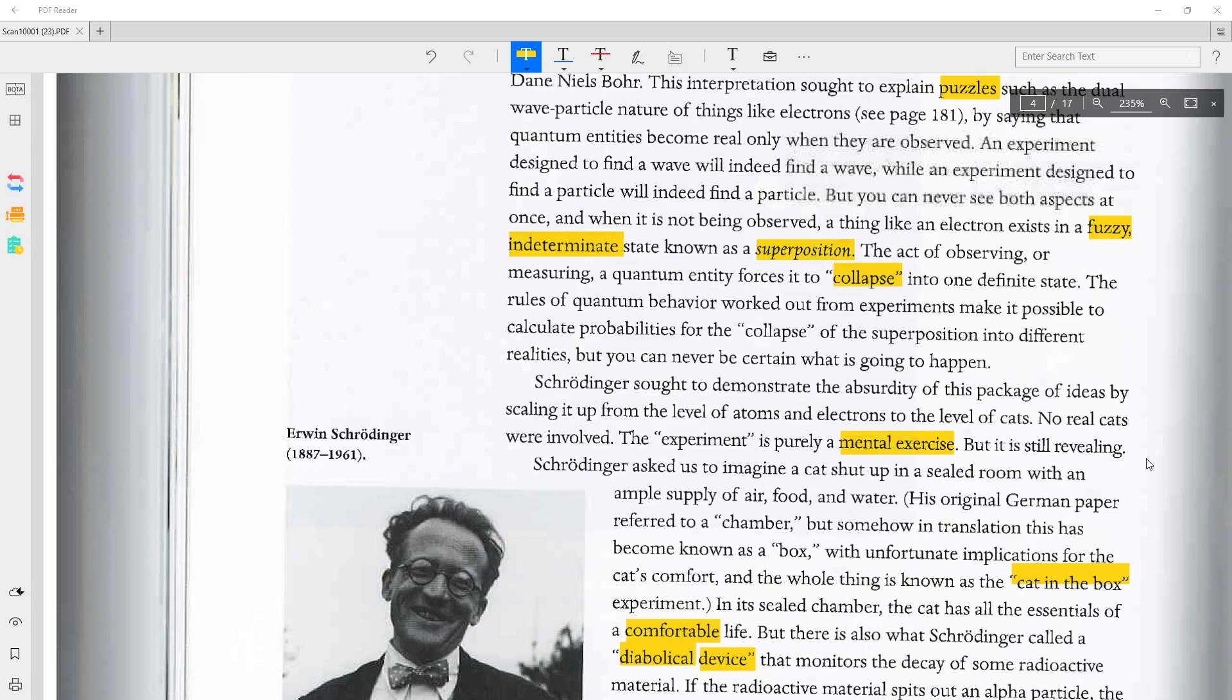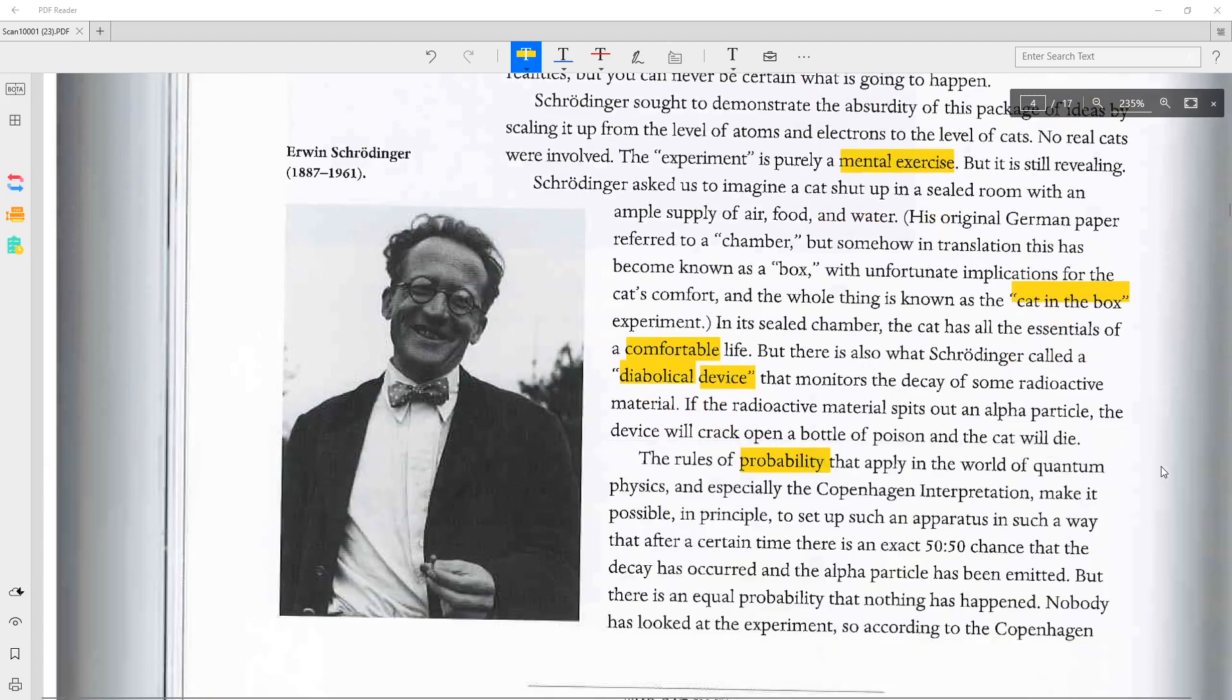But you can never be certain what is going to happen. Schrödinger sought to demonstrate the absurdity of this package of ideas by scaling up from the level of atoms and electrons to the level of cats. No real cats were involved. The experiment is purely a mental exercise. But it is still revealing.